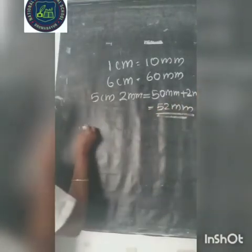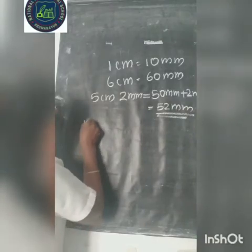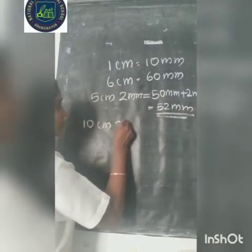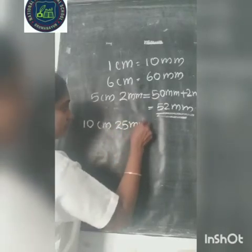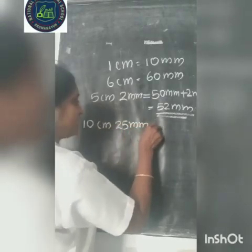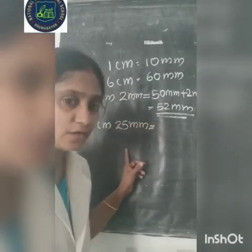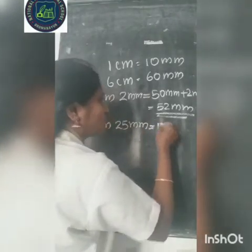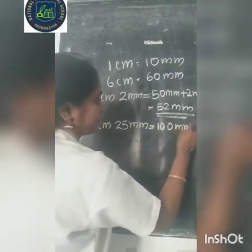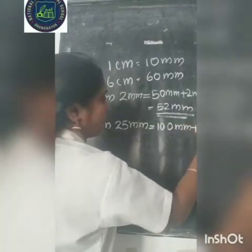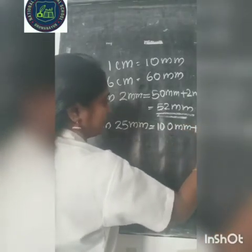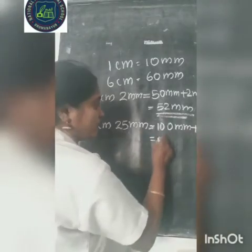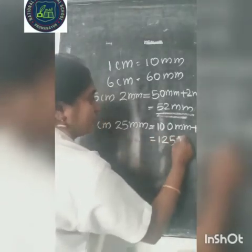One more question: 10 centimeter 25 millimeter. 10 centimeter is equal to 10 into 10, that is 100 millimeter. Plus 25 millimeter, that is equal to 125 millimeter.